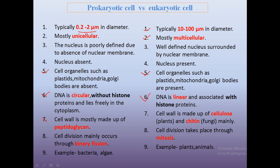Prokaryotic cell wall is made up of peptidoglycan. Eukaryotic cell wall is made up of cellulose in the case of plants and chitin in the case of fungi, and for animals there is no cell wall. Cell division in prokaryotes mainly occurs through binary fission, and in eukaryotes it is mitosis.